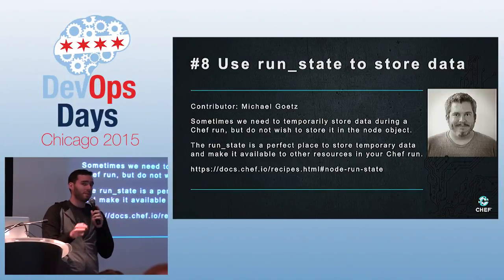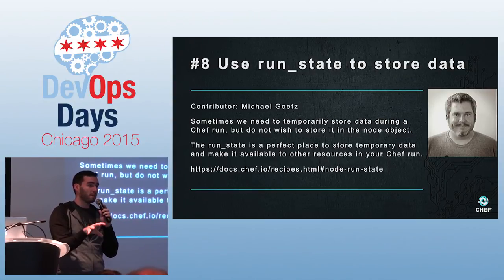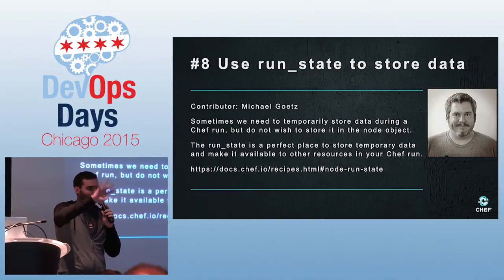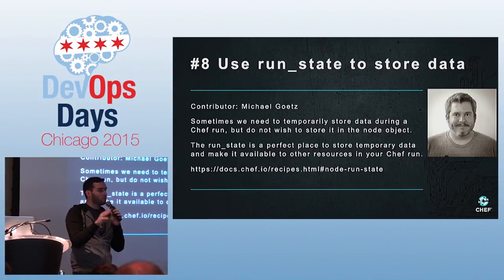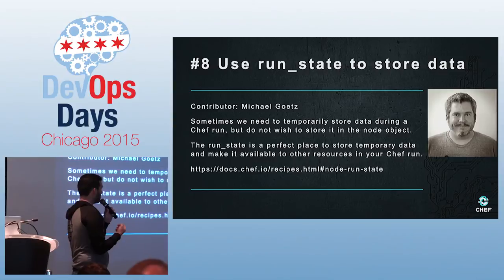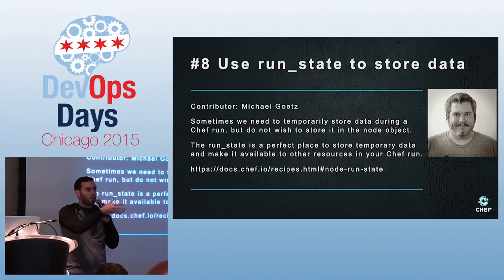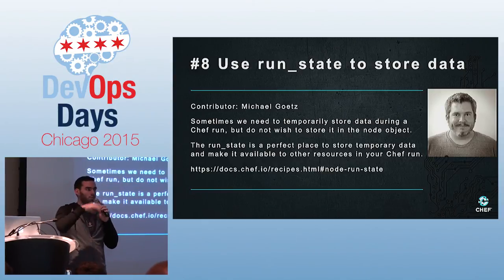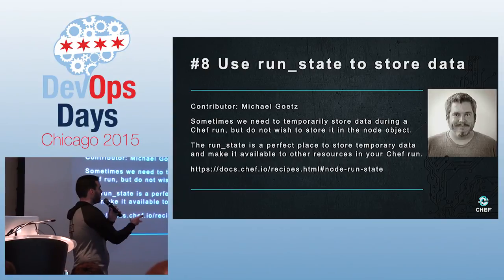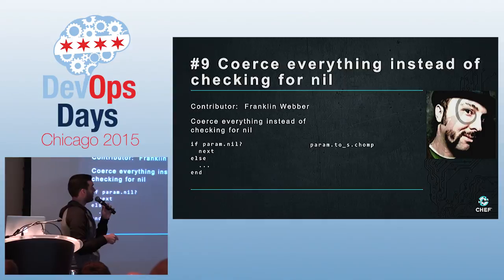Using run state to store data: if there's data you want to store temporarily in your node state, but you don't actually want that data to go to your Chef server, you can store it in the run state. This allows you to create some data in one recipe and then reference it in another, but without that data living forever in the cloud. There's a URL to help you do that.